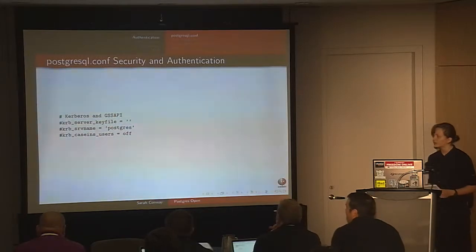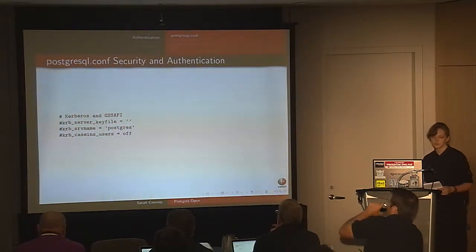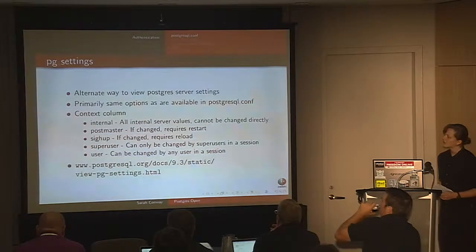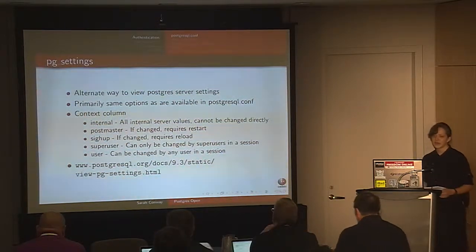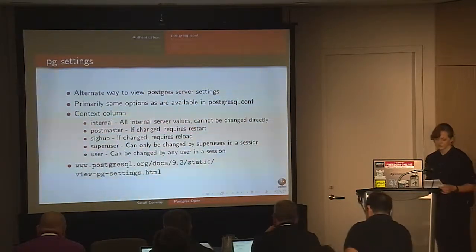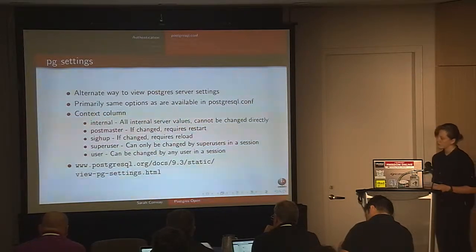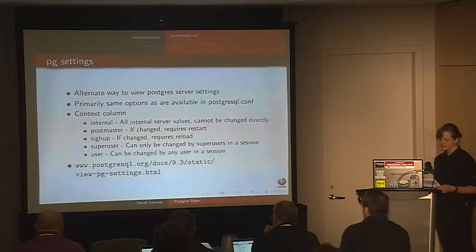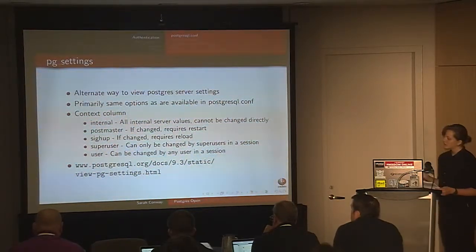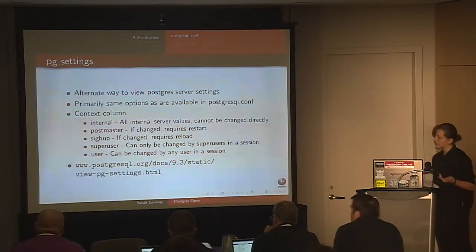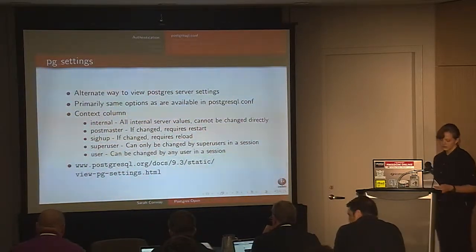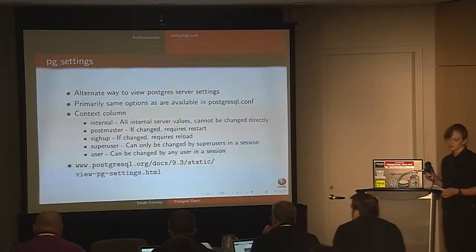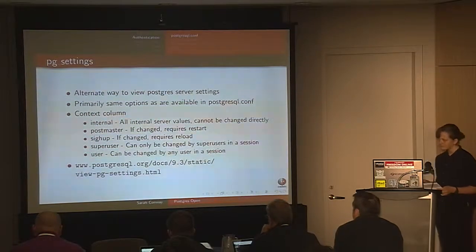There's also a section on Kerberos and GSSAPI; I just want to mention it's here, but it's beyond the scope of this talk. Another way of viewing server settings is through pg_settings, accessible from within a database session. It contains mostly the same parameters as the configuration file, plus some internal values, and provides a convenient way to see which parameters require restart or reload via the context column. There are five types of context: 'internal' (cannot be changed directly), 'postmaster' (requires restart), 'sighup' (requires reload), 'superuser' (can be changed in session by a superuser), and 'user' (can be changed by any user in session).